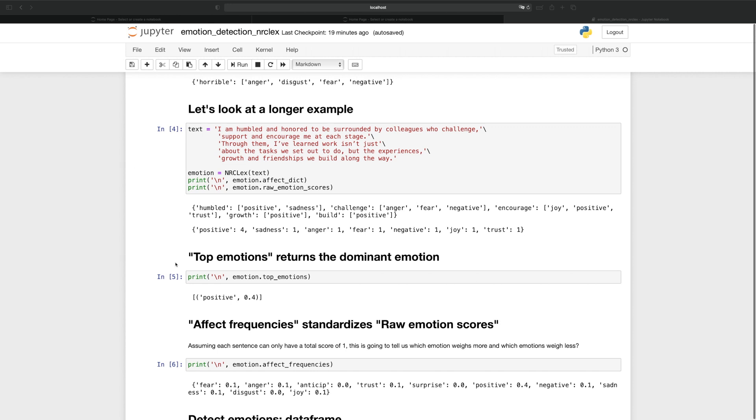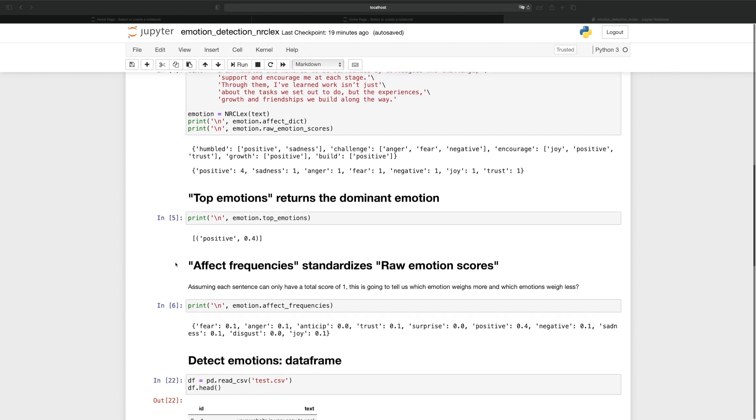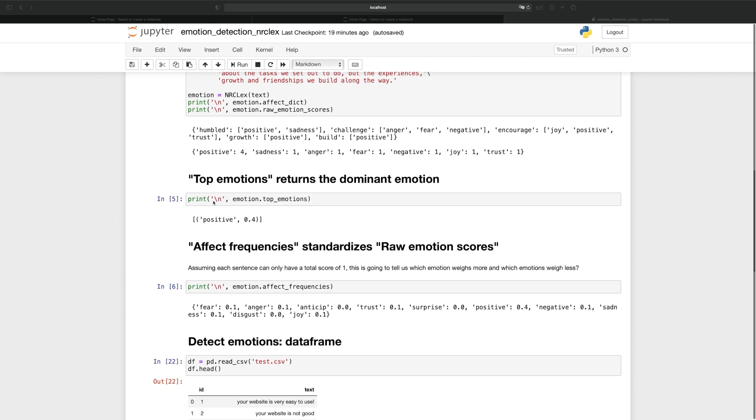Next, the method top emotions is going to return the dominant emotion. For the sentence that we just saw above, the top emotion is positive, and this is actually very sensible. A human can tell you that the paragraph that we just read is indeed expressing positive sentiments. And point four comes from dividing four out of the ten counts of emotions that we have detected.